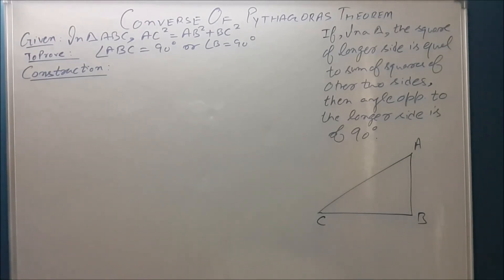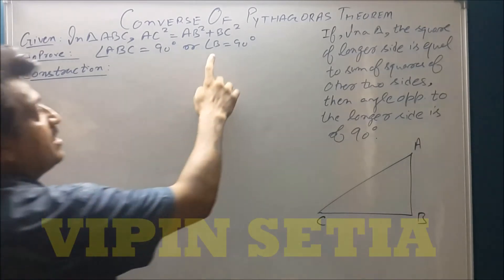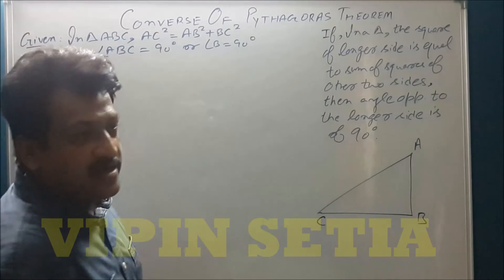In the given figure, in triangle ABC, AC is the longer side and AB and BC are the other two sides. We have to prove that angle B is of 90 degrees.